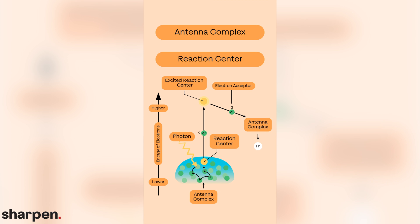Although some bacteria have one photosystem, plants have two distinct photosystems. These photosystems vary in the wavelengths of light they can capture. They also rely on different sources for the electrons they energize. As these electrons travel away from the two different photosystems, they power the synthesis of two different products needed to complete photosynthesis.